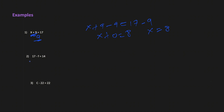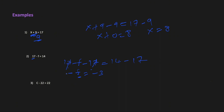The second example is 17 minus f equals 14. We can see that with f we have plus 17, so we'll subtract 17 on both sides: 17 minus f minus 17 equals 14 minus 17. Since 17 minus 17 is 0, we get negative f equals negative 3. Since we have negative on both sides, we cancel the negative sign and get f equals 3.